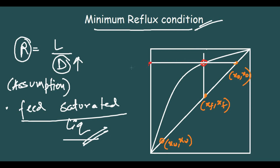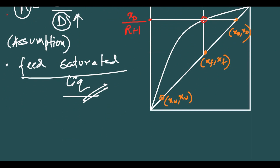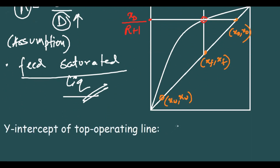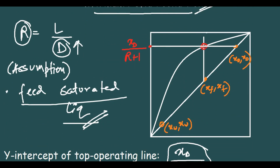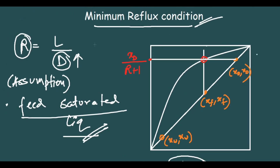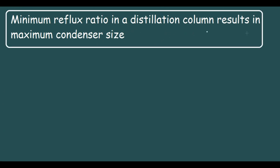The top operating line always passes through XD, XT. The extra condition for minimum reflux is that it also passes through the intersection of the Q line and the equilibrium curve. The y-intercept of the top operating line is XD/(R+1), and in this case it is XD/(R_minimum + 1). Also remember: the minimum reflux ratio results in the maximum condenser size.